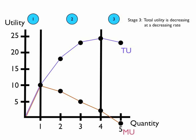Stage 3: Total utility is decreasing at a decreasing rate. This is seen with the consumption of the fifth slice of pizza. Your total utility was the same at slice 3 as it was at slice 5, meaning that you consumed too much.